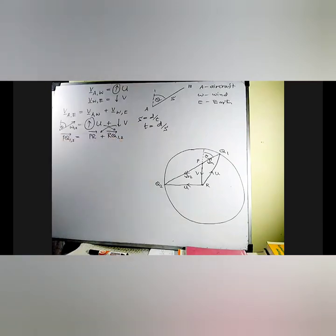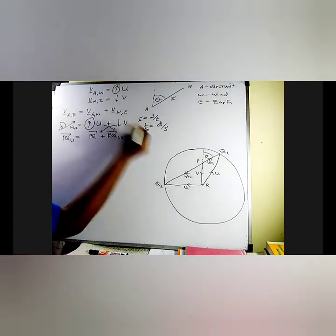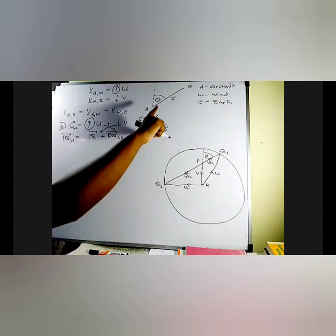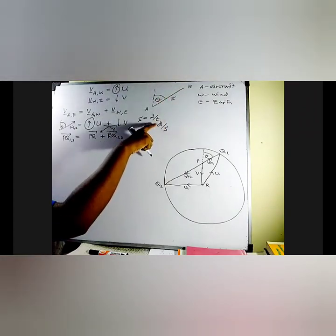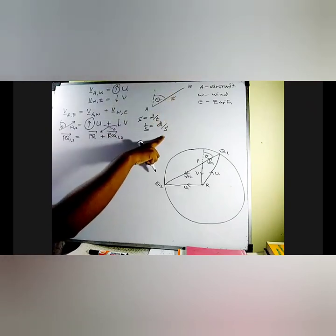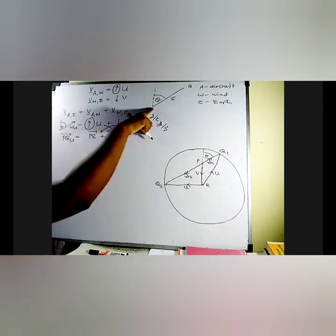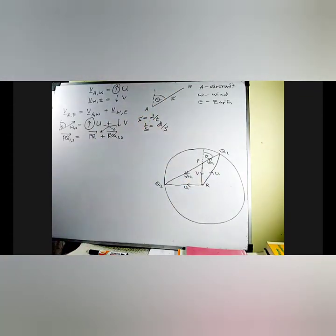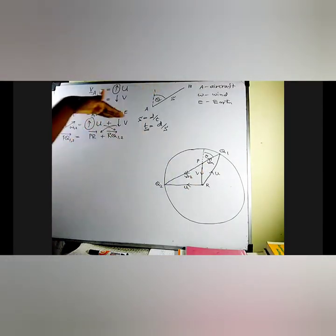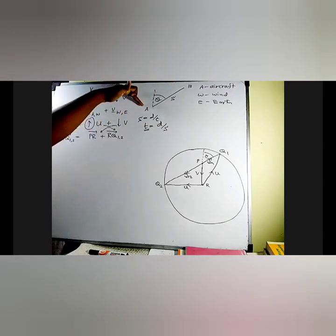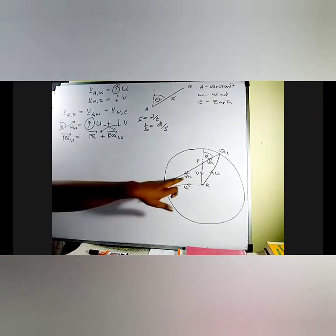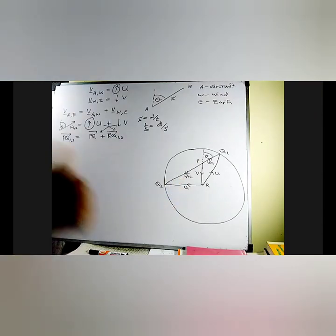Time taken by the aircraft to travel from A to B equals distance s divided by speed w1. Time for the return journey from B to A equals distance s divided by speed w2. So we need to find w1 and w2. How? By performing a small geometric construction.